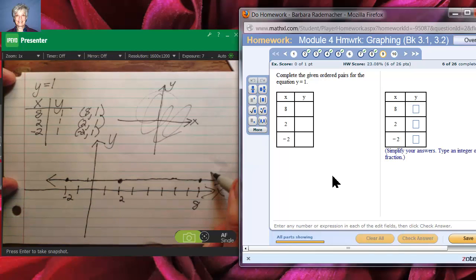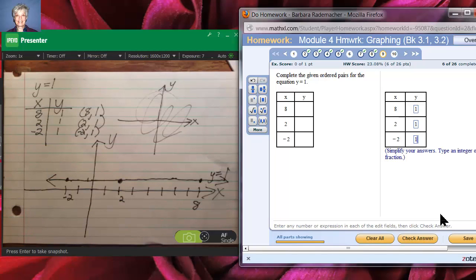This is the horizontal line y equals 1. y is being held to 1. x can be anything it wants. So, let's see here. We'll have a 1, and a 1, and a 1, and we're done. Check my answer. Yay! Okay, talk to you later.